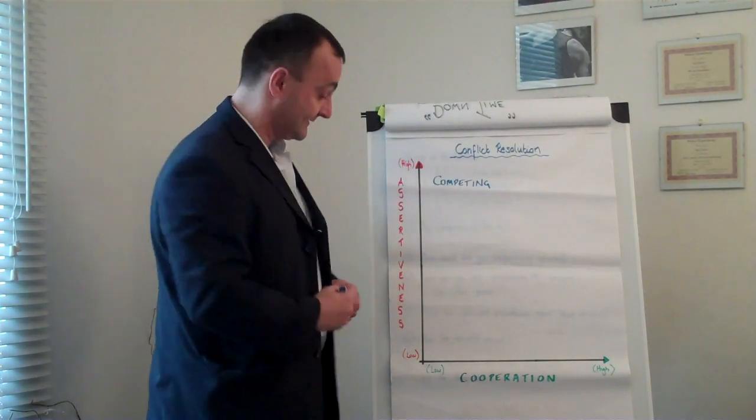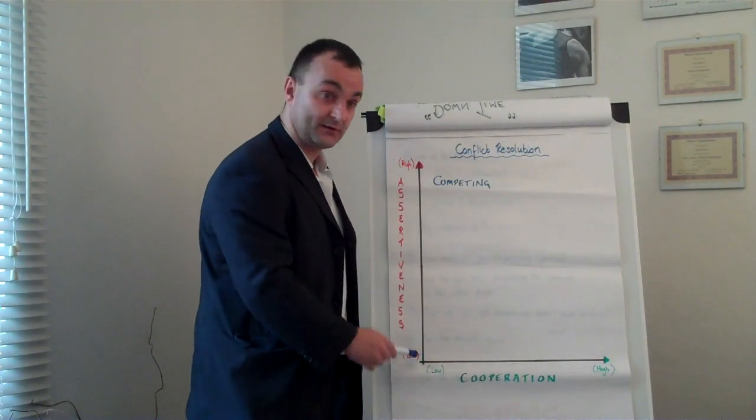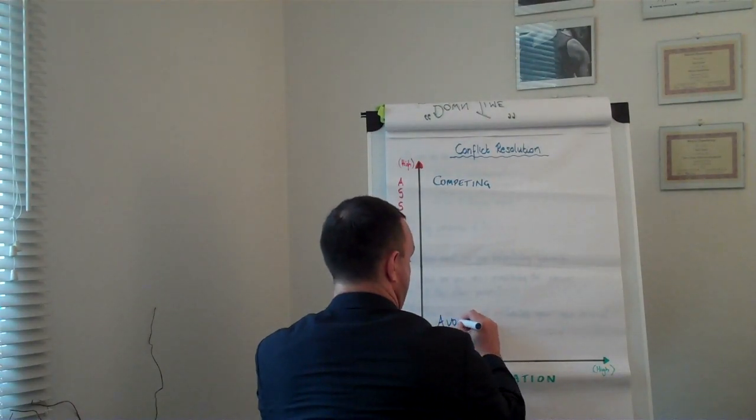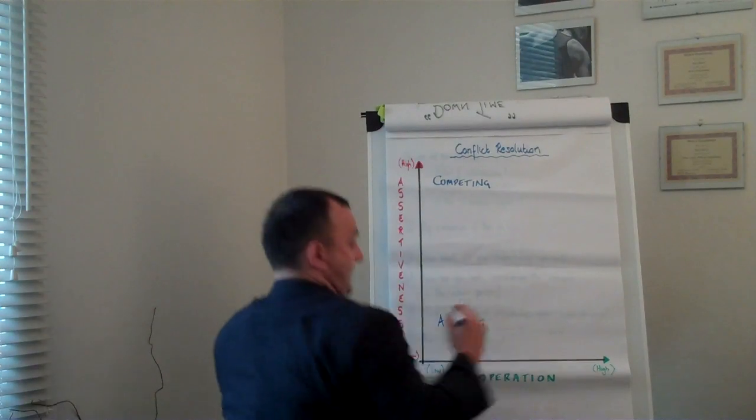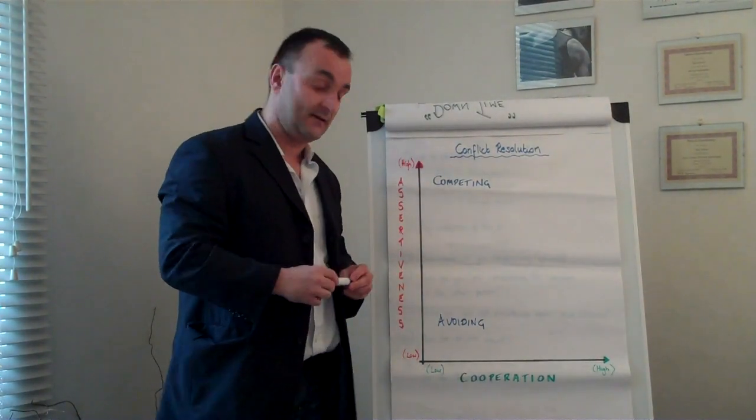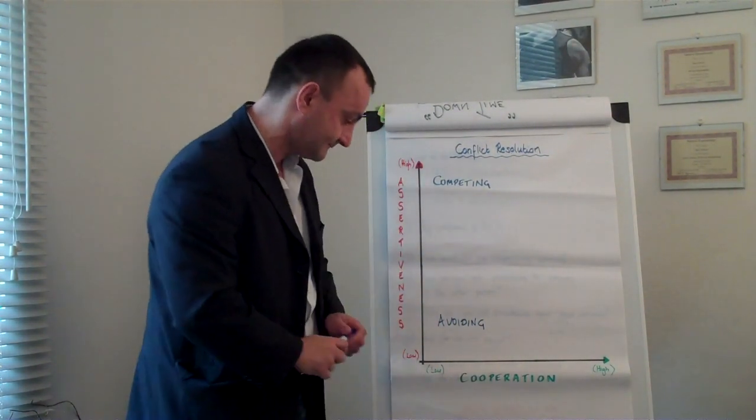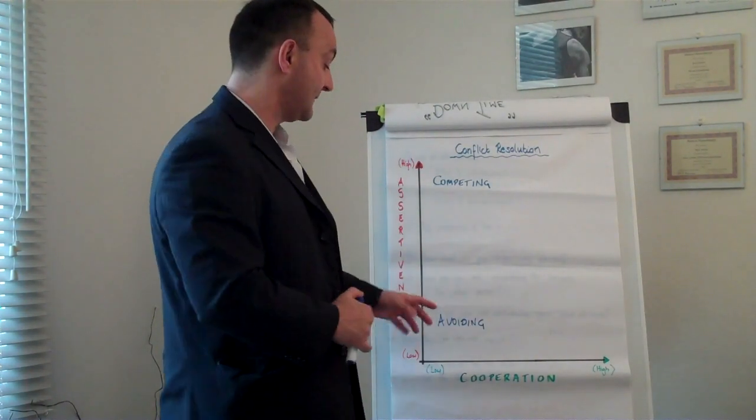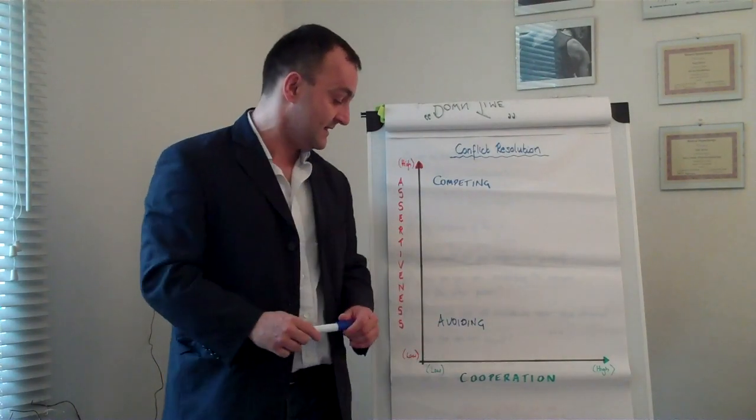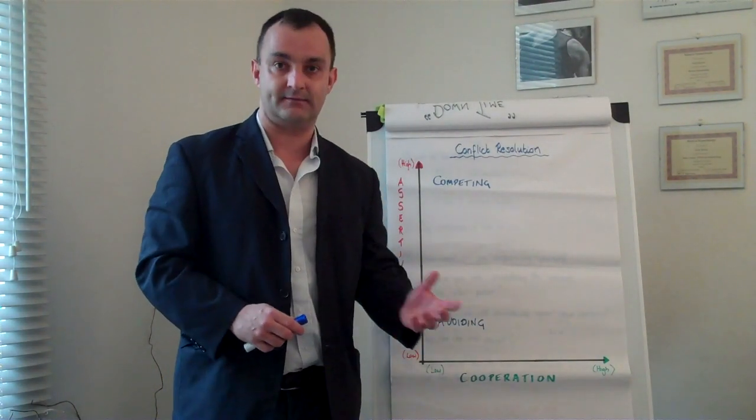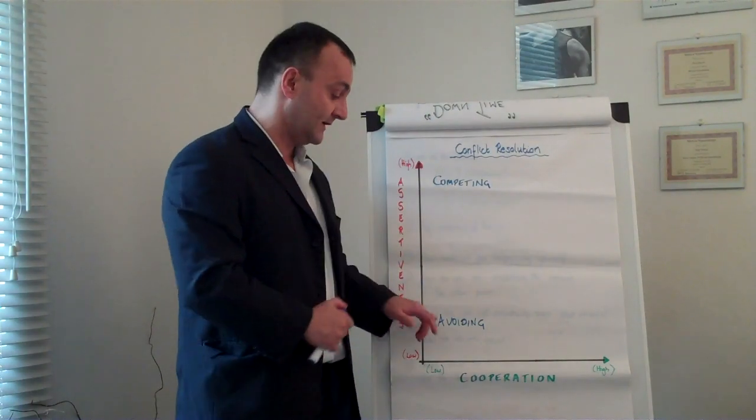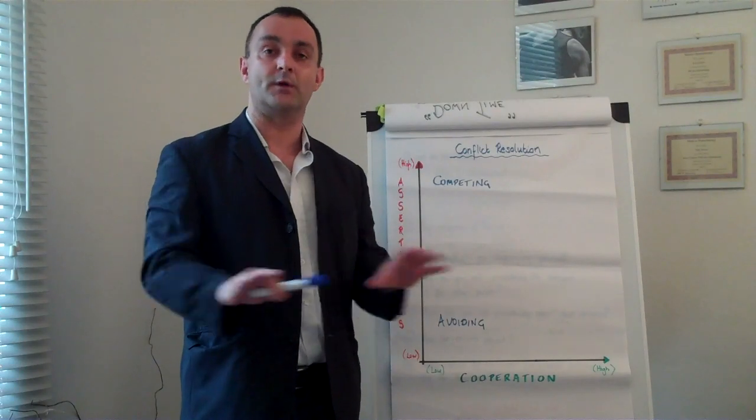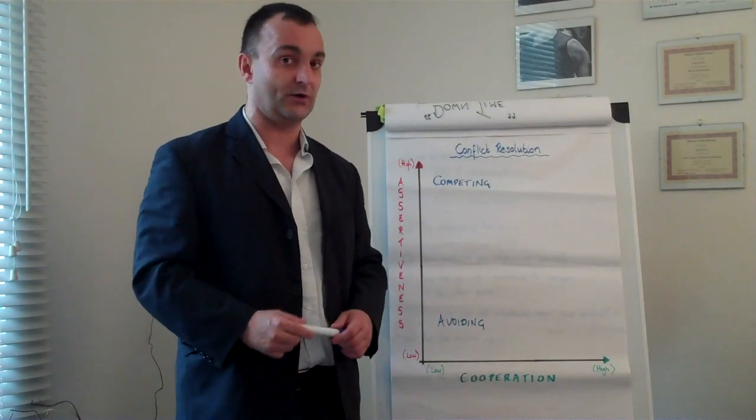At the other end of the scale, with low cooperation and low assertiveness, we get avoiding. People avoiding the conflict altogether. This is not a great strategy because it doesn't actually change what's happening. The only time I would use this strategy is if somebody is relentlessly attacking or in a violent or highly aggressive situation where you want to completely avoid that. This is when you're dealing with somebody who's not going to negotiate.